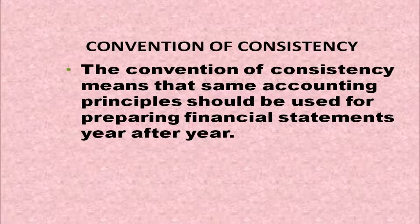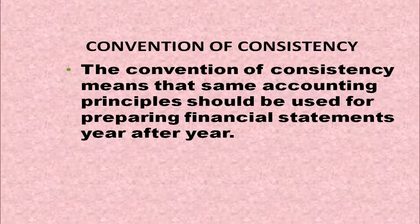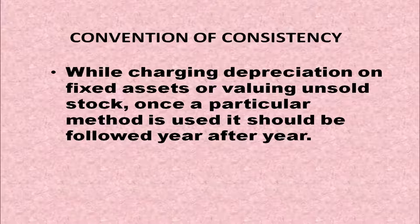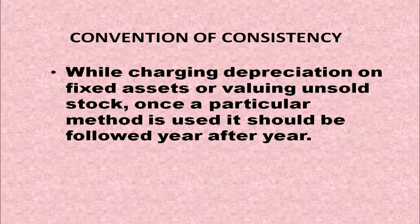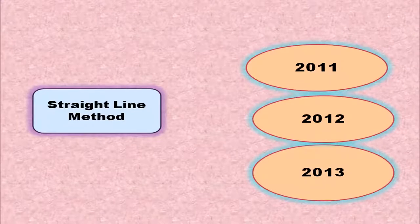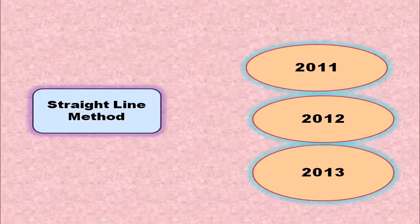Let us study the first convention: Convention of Consistency. It means that the same accounting principles should be used for preparing financial statements year after year, whether while charging depreciation on fixed assets or while valuing unsold stock. Once a particular method is used, it should be followed year after year. For example, if the straight line method is used in 2011, it should be followed in 2012 and 2013 — then only comparison will be possible.